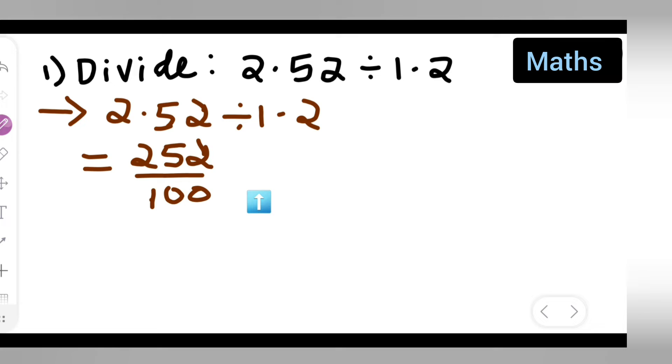So write down divide by 12 upon 10. What I'll have to do is 252 upon 100 divided by 12 upon 10.